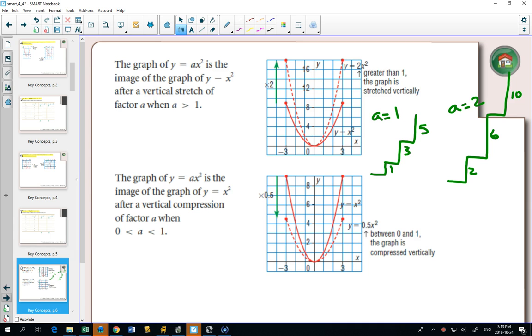And if the number is between 0 and 1, like 0.5, when a equals 0.5, you would go over 1, up 0.5, then over 1, up 1.5, then over 1, up 2.5.